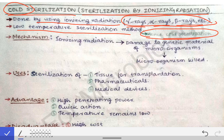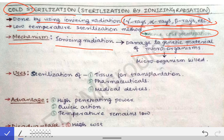The mechanism is that ionizing radiation causes damage to the genetic material of the microorganisms. This alters the production of proteins and enzymes within the microorganisms. Therefore, the microorganisms cannot survive after the alteration of their enzymes, and they get killed. This is the mechanism of action of ionizing radiation in cold sterilization.